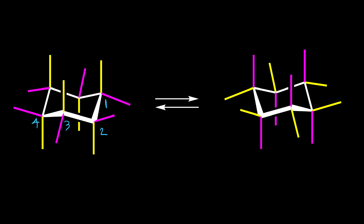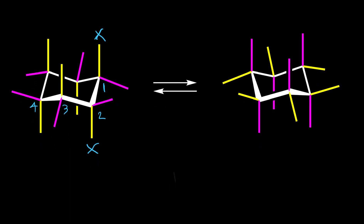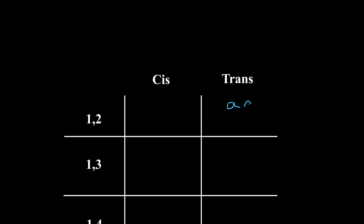I'm going to start with positions one and two. If we have two groups on axial position for carbons one and two, X here is pointing up and here is pointing down. These two X's are on two different sides of the cyclohexane, so it is trans in this situation. We can start to derive a table: for positions one and two, axial-axial gives a trans isomer.